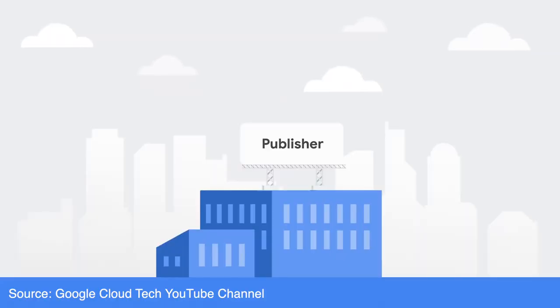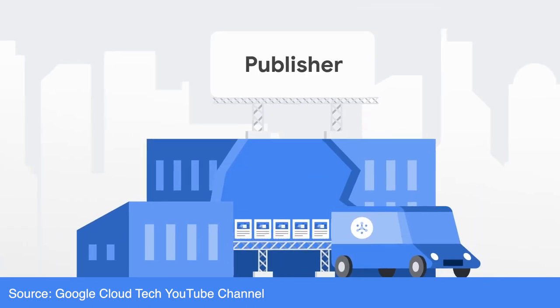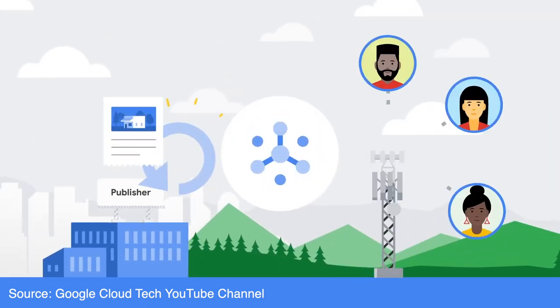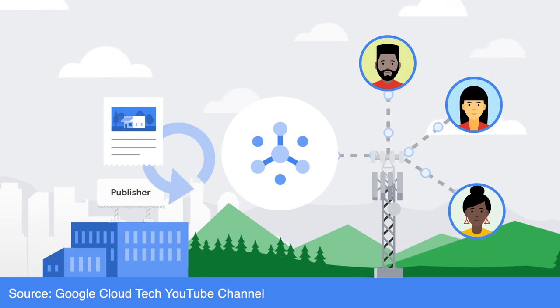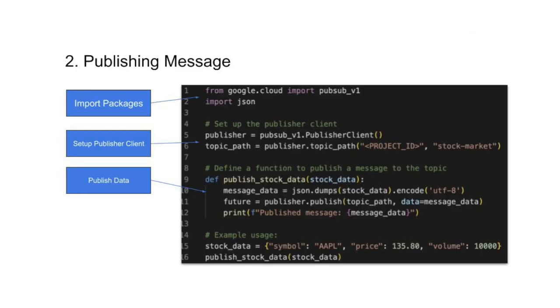PubSub enables asynchronous communication between different services and components. It works on the publisher and subscriber model: the publisher sends a message to a topic, and the subscriber can consume that message and pass it for processing. In our case, we will have data coming from the stock market API, which will publish messages to a PubSub topic. On the other hand, we will have a subscriber who can consume this information. This is about passing data from one system to another in a real-time manner.